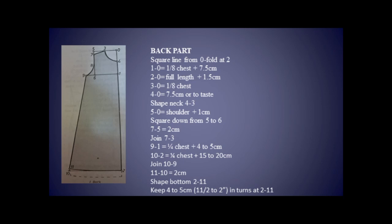Then 0 to 3 is the neckline; for the neckline we take 1/8 chest. The depth of the back neckline — normal neckline is 6 cm, but for this we add 7.5 cm for the depth of the back neckline. Then shape the neckline from 3 to 4 according to taste. Then 0 to 5 is shoulder width plus 1 cm. Square down from 5 to 6. Then 0 to 5 shoulder width plus 1.5 cm, and 5 to 7 is the shoulder slope — add 2 cm. Then join 3 to 7 for the shoulder line.